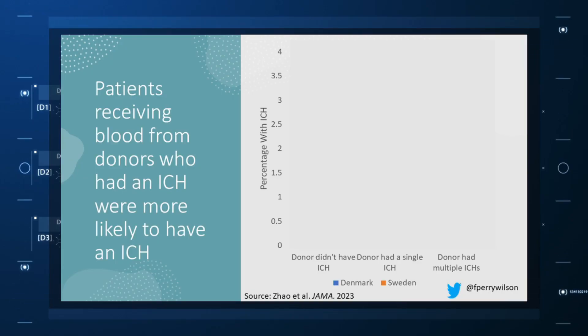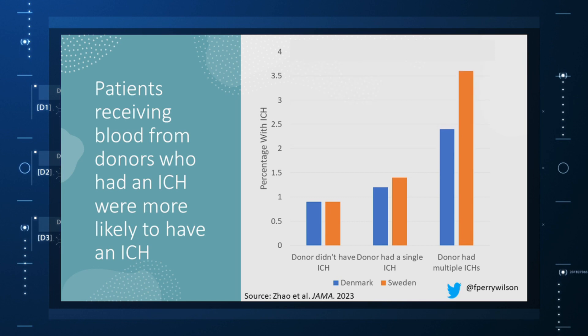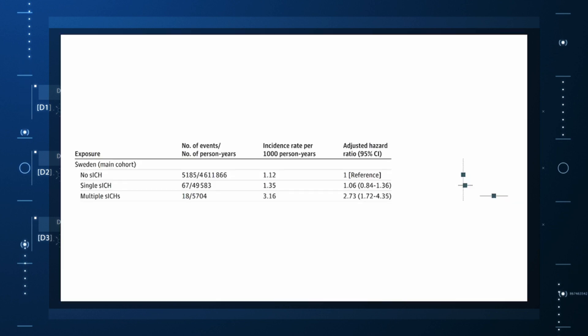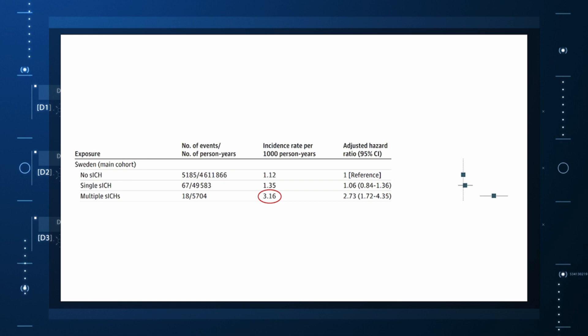The big question: would recipients who got blood from individuals who later had brain bleeds themselves have brain bleeds? The answer is yes, though with an asterisk. You can see the results here. The risk of recipients having a brain bleed was lowest if the blood they received was from people who never had a brain bleed, higher if the individual had a single brain bleed, and highest if they got blood from a donor who would go on to have multiple brain bleeds. All in all, individuals who received blood from someone who would later have multiple hemorrhages were three times more likely to themselves develop hemorrhages. It's fairly compelling evidence of a transmissible agent.